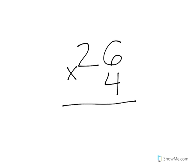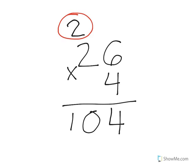Whenever we multiply, we always write the larger number on top and the smaller number on the bottom. In this case, we put the 4 on the bottom. We start in the ones place — 6 times 4 gives us 24. Write down the 4 in the ones place and regroup the 2 over to the tens place. Now multiply the tens place: 4 times 2 is 8, then add in that 2 to get 10. So our product is 104.